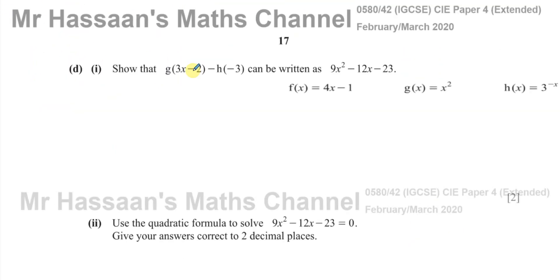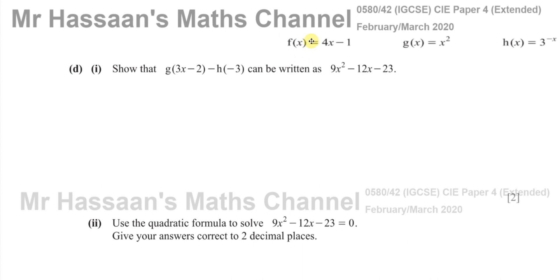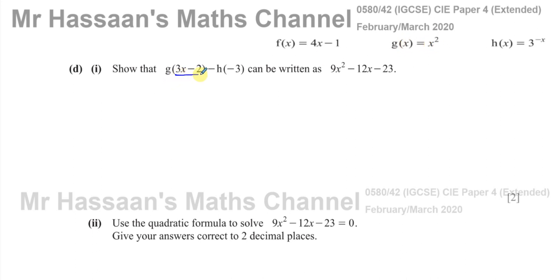For part d, it says show that g(3x minus 2) minus h(negative 3) can be written as 9x squared minus 12x minus 23. It's very important when you have a question like this that you show your steps carefully, since they've already told you what the answer will be. For g(3x minus 2), we replace x with 3x minus 2 in g(x) = x squared, so this becomes (3x minus 2) all squared.